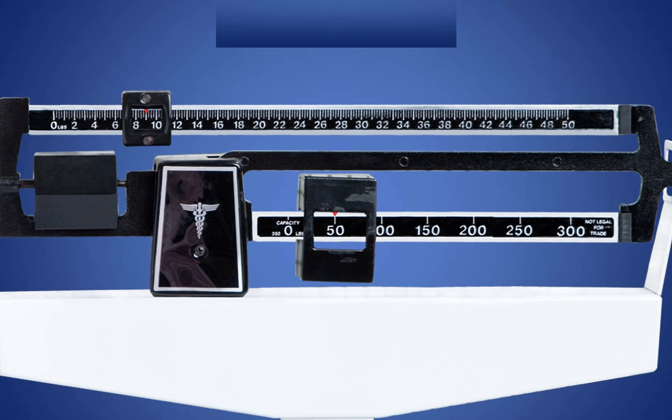Now we are ready to calculate the total weight. To calculate the total weight, add the weight displayed by the large weight indicator on the bottom bar to the weight displayed by the small weight indicator on the top bar. In this image, the bottom bar has a large weight indicator on 50 pounds. The top bar has a small weight indicator on 9 pounds. Add the bottom number to the top number and you will arrive at the total weight of 59 pounds.